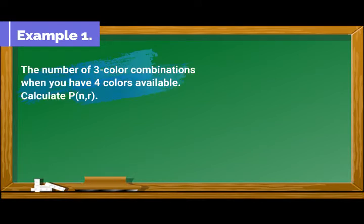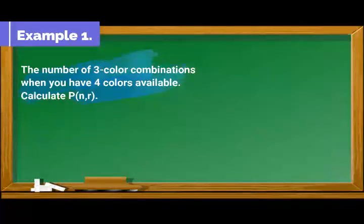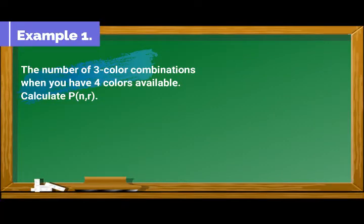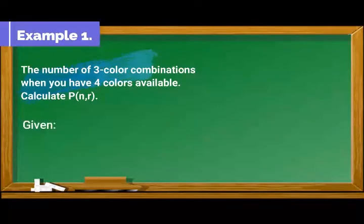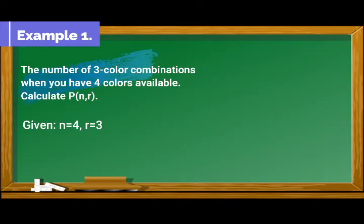Example number 1: The number of 3 color combinations when you have 4 colors available. Calculate the permutation of n taken r. In this problem, our given is that n is equal to 4 and r is equal to 3.